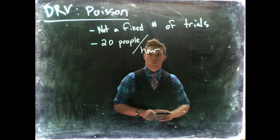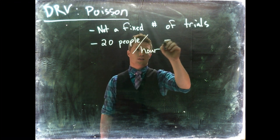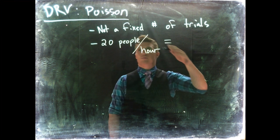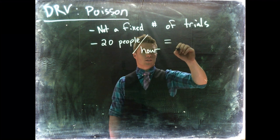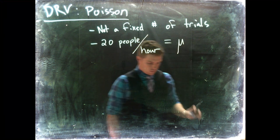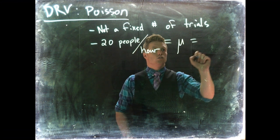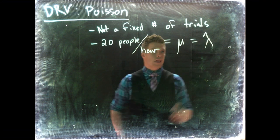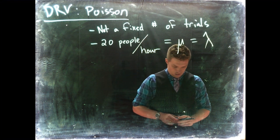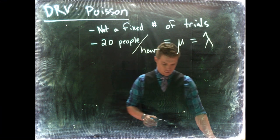This would be our mu, and our mu is also equal to lambda. This is the mean number of successes.